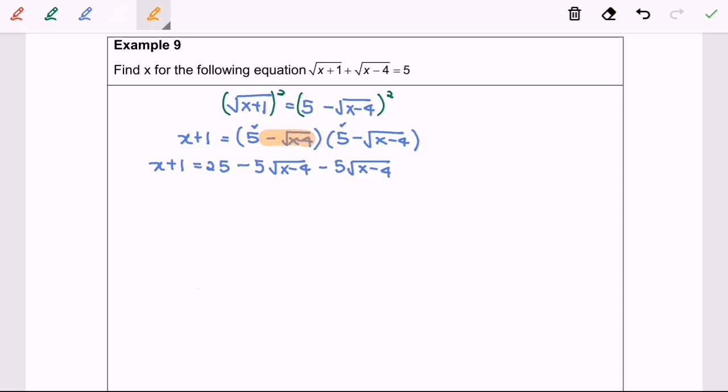Finally, negative square root of x minus 4 multiply with negative square root of x minus 4, we will have positive (x minus 4).